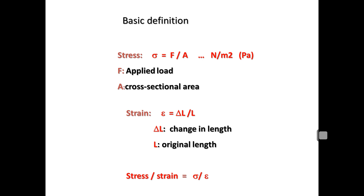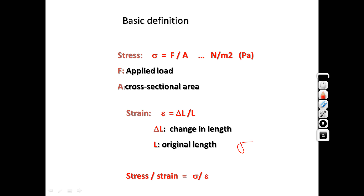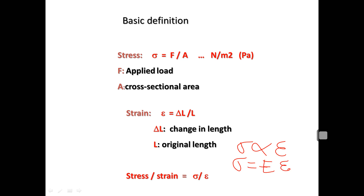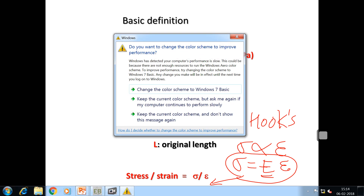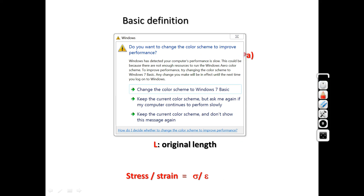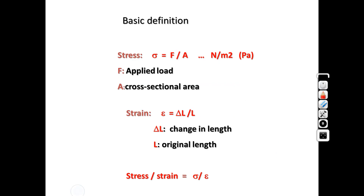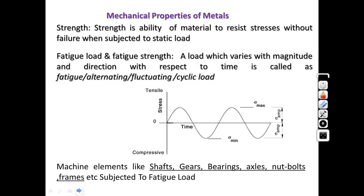Now we introduce a new term: stress divided by strain, which is called the modulus of elasticity or Young's modulus. Stress Sigma is directly proportional to strain, and that constant of proportionality is represented by E, called Young's modulus or modulus of elasticity. So stress by strain — Sigma by epsilon — equals E. This is the statement of Hooke's Law: in the proportional limit, stress is directly proportional to strain, and the constant of proportionality E is the modulus of elasticity.